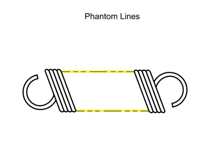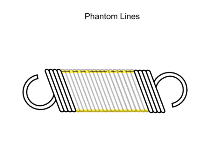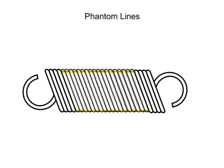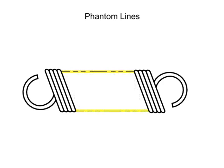Finally, phantom lines are used to show repeated detail. In this view, a spring is depicted. Since the coils of the spring are all the same, it's not necessary to draw them all. Instead, phantom lines are used to illustrate that the coils continue as originally shown.